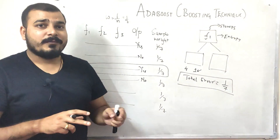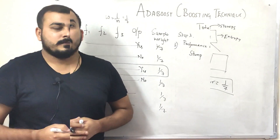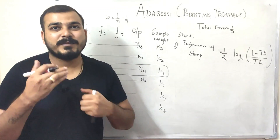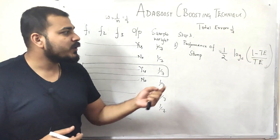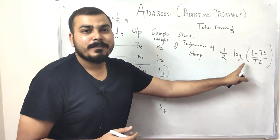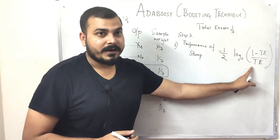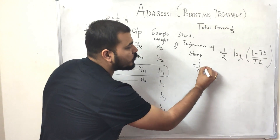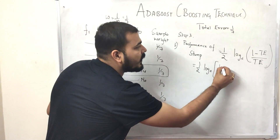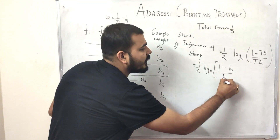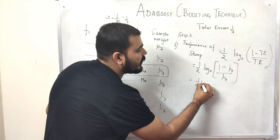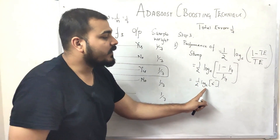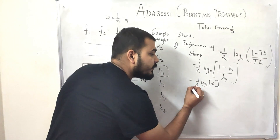In step 3, we find the performance of the stump — that is, how well the stump has classified. The formula is: performance = (1/2) × log_e((1 − total error) / total error). Substituting our total error of 1/7, we compute log_e(6/1 × 7/1), which gives us approximately 0.896.